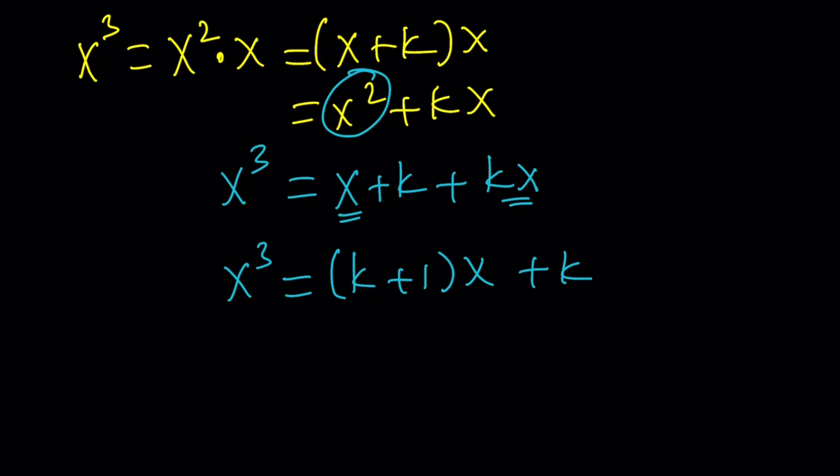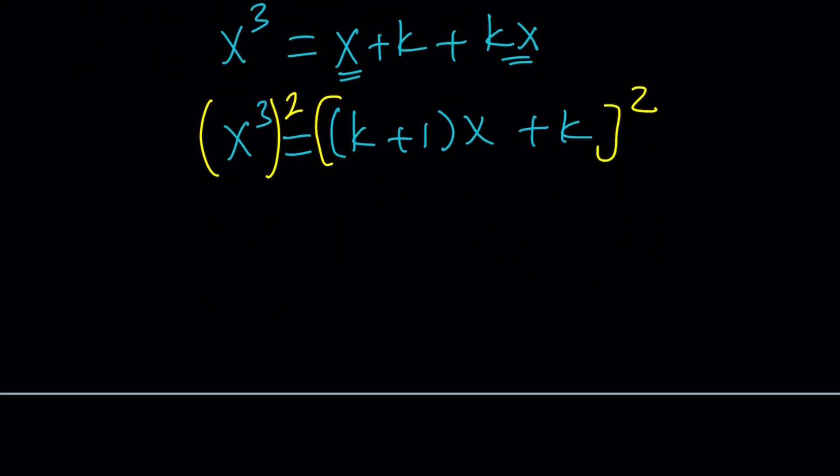That gives us the following: x^6 equals (k + 1)^2 times x^2, plus 2k(k + 1)x, plus k^2. Awesome. Now notice that we got another x^2.